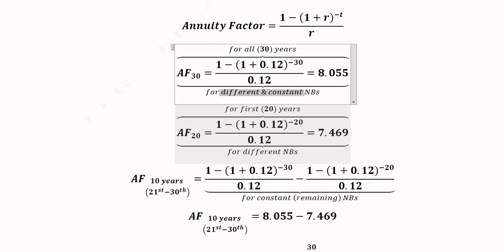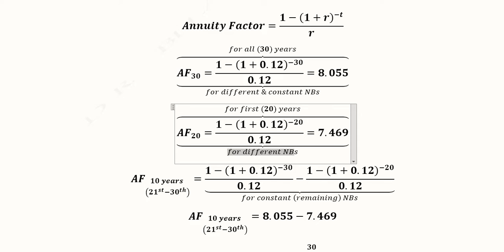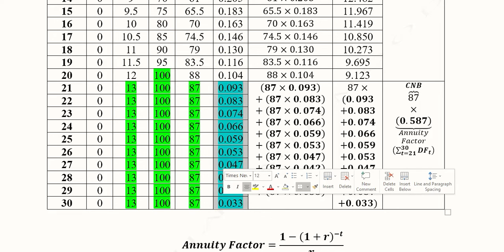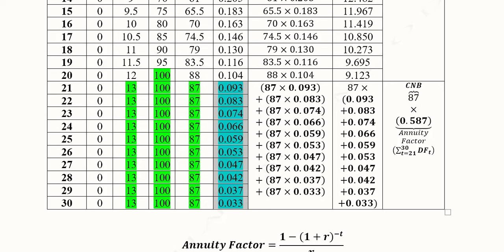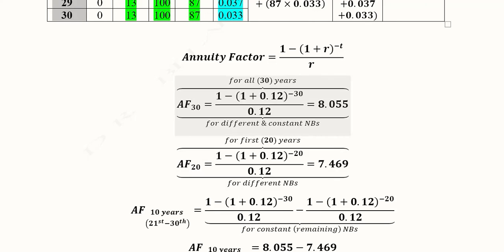The annuity factor for the first 20 years can be easily calculated using the same formula; the only difference is the value of t, which here is 20. This is for different years because for the first 20 years the net benefits are different. Basically we are looking for the sum of discounting factors for years 21 to 30, so if we take the difference of the annuity factor for 30 years and the annuity factor for 20 years, we get the annuity factor for the remaining years.